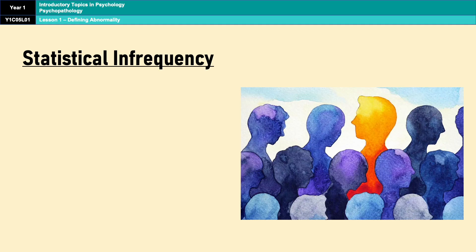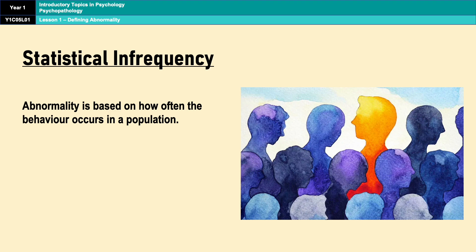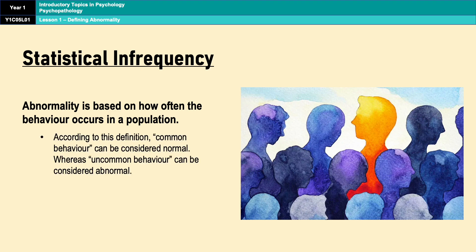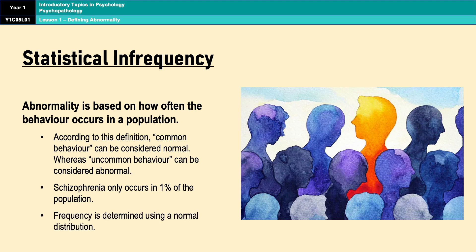Our first definition is statistical infrequency. Statistical infrequency determines abnormality by how rare specific characteristics are within a given population. For example, schizophrenia only affects 1% of the population and is therefore statistically infrequent and abnormal. The frequency of a trait is established using a normal distribution curve, where the majority of the population falls within the middle range for any characteristic, and only a small percentage fall at the extreme ends. Abnormality is therefore determined by how far an individual's behaviour deviates from the statistical norm.